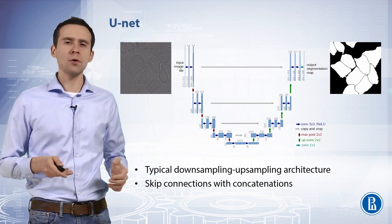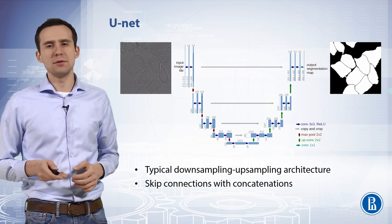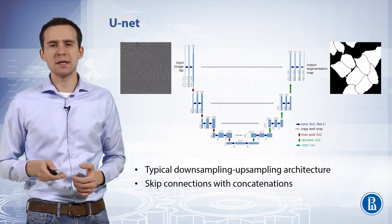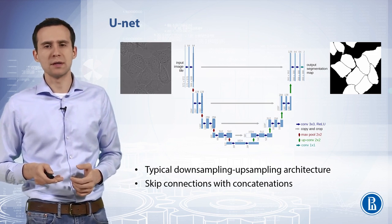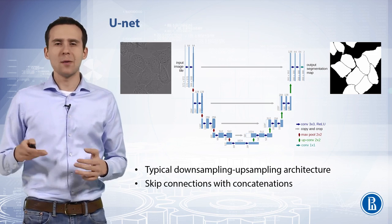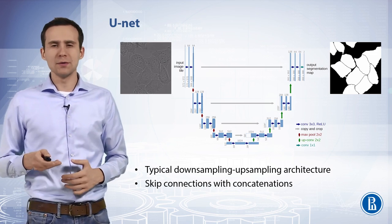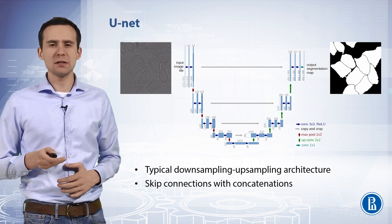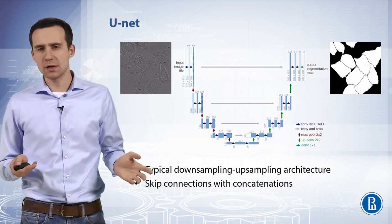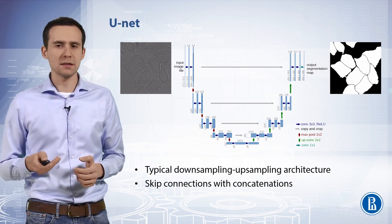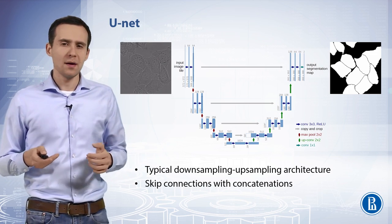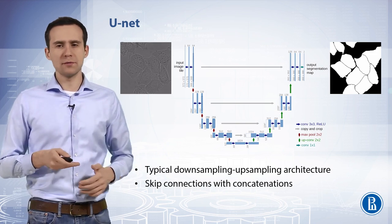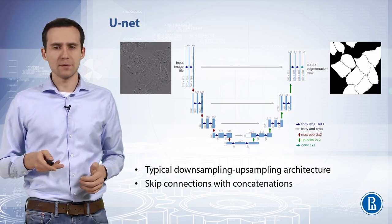The cropping is necessary due to the loss of border pixels in every convolution. At the final layer, a 1×1 convolution is used to map each 64-component feature vector to the desired number of classes. In total, the network has 23 convolutional layers. U-Net performs well on medical image segmentation tasks.